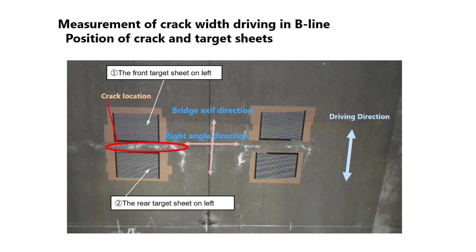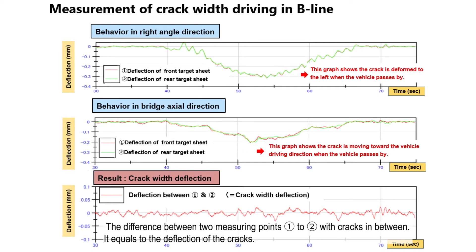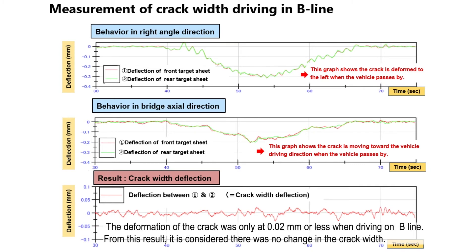The lattices were able to measure crack movement in both the x and y axes. Here we see the measurement of change in the crack, although there was very little deflection. The testing was considered a success by the customer and the equipment was easily removed with no permanent change to the structure.